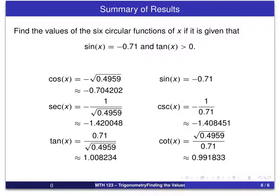Here is a summary of the results. At this stage, I did use my calculator and calculated these decimal approximations for five of the six circular functions. We were given an exact value for sine of x as minus 0.71. So there's another example of how to use the Pythagorean identity and the definitions of the other circular functions to determine all values of the circular functions. So long for now.